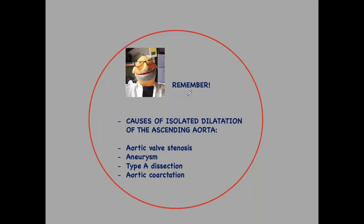Summarizing: causes of isolated dilatation of the ascending aorta are aortic valve stenosis, aneurysm, type A dissection, and aortic coarctation. Aortic coarctation is the only one that you can suggest on the plain film with some reliability.